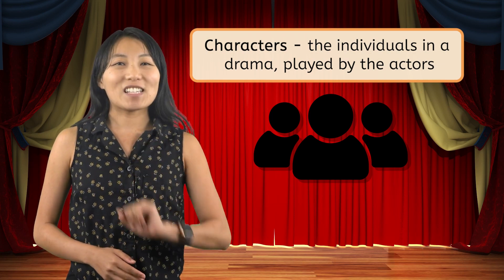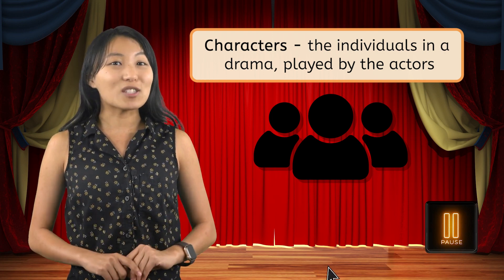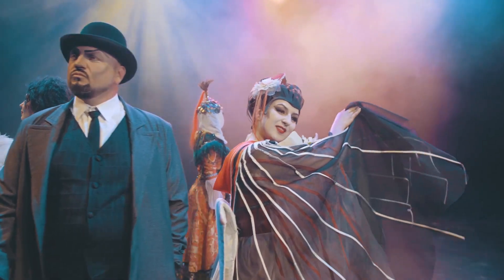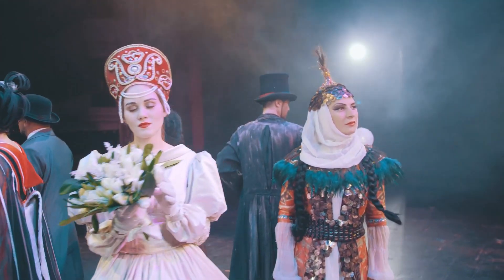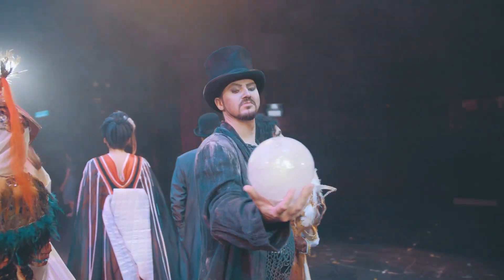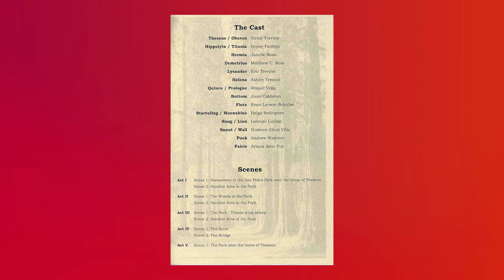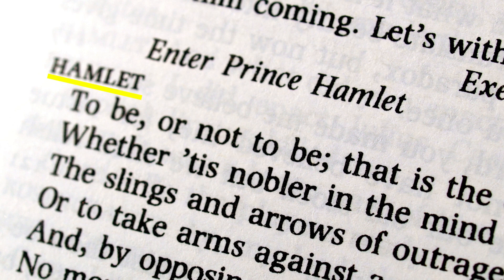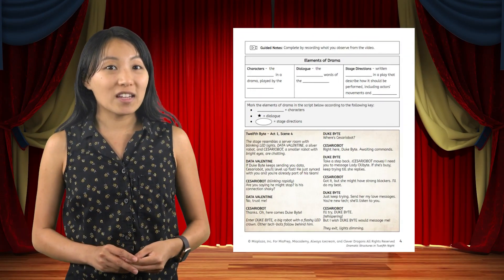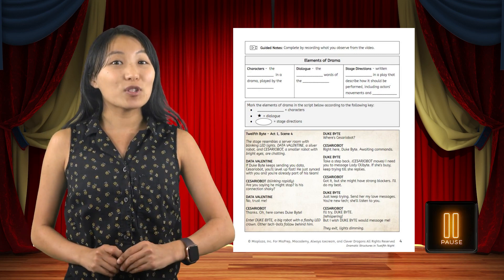Our first dramatic element is character. Characters are the individuals in a drama played by the actors. Pause this video and write that definition in your PDF. Characters in drama, just like in other forms of literature, each have their own personalities, desires, and conflicts. These help to shape the story. Characters in dramas show up in two ways. The first is in what is called a Dramatis Personae — a list of characters with brief descriptions located at the front of a play. This helps the casting director identify the parts of the play that they need to cast. In the actual text of a play, character names appear in all capital letters before their lines. When performing a play, character names are not spoken out loud; instead, they indicate which character is speaking the following lines. In your copy of Twelfth Byte, underline any characters that you see. Pause this video here and resume when you are ready to move on.